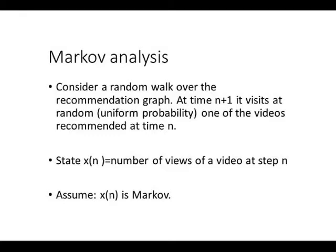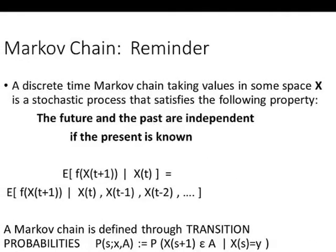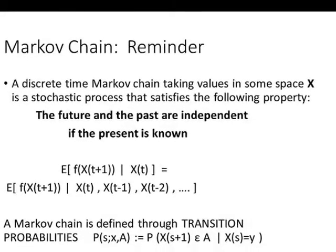We consider a random walk over the recommendation graph in the following way. At time n+1, we visit at random, choosing with uniform probability, one of the videos recommended at time n, and so on. The state of the Markov chain x_n is the number of views of a video at step n, and we want to learn about the properties of x_n and see whether we return frequently to x_n.